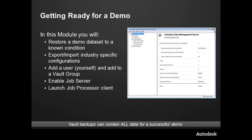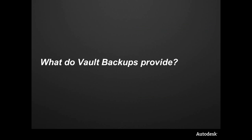Let's talk about how to prepare your Vault. From a demonstration standpoint, what we're going to do is learn how to restore a demonstration data set to a known point — think snapshot. Then we're going to take a look at how we can import and export settings from one Vault into another, or maybe you want to make your own Vault. We'll talk about users. Then, on your own machine, we're going to enable job server in the Vault, and then launch the job processor client and see how we can use that inside of our demonstrations.